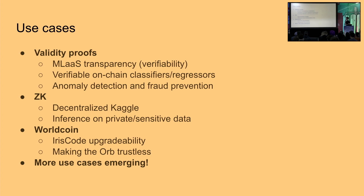Use cases that only use validity proofs — where you do not hide any part of the computation — include machine learning as a service. If you want to use a model but don't have it locally, you delegate it to OpenAI. As a user you have no guarantee they're running the correct model — they could give you GPT-3 instead of GPT-4 and you wouldn't be able to tell. In a possible future, when you can create proofs of large language models, you'd be able to query an API and it would have to give you a proof that they ran the model you want.